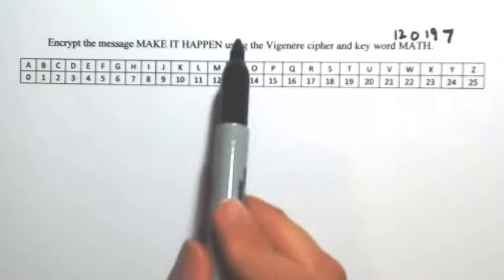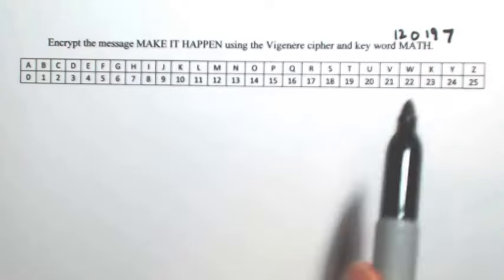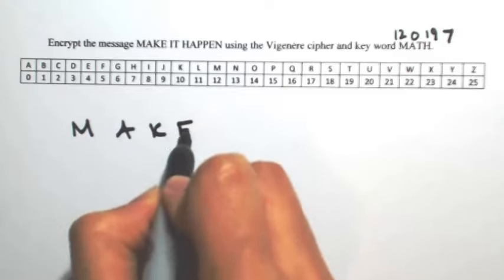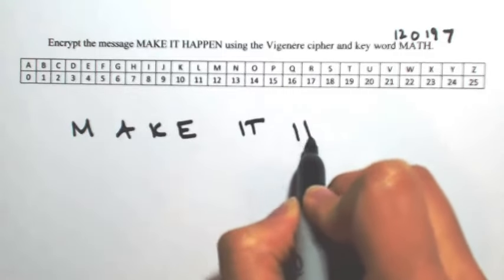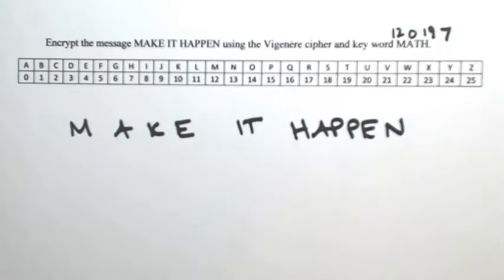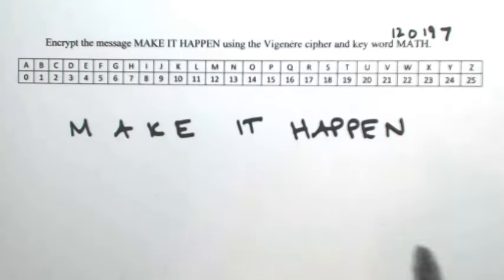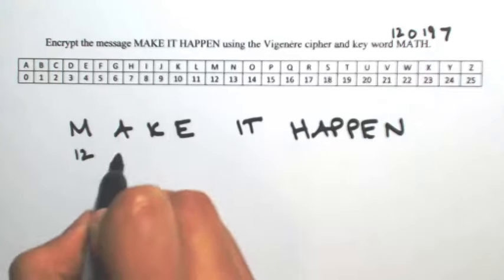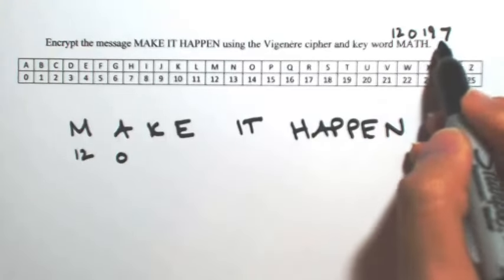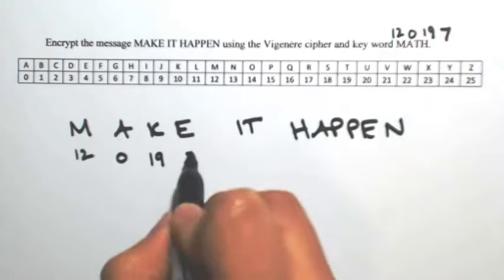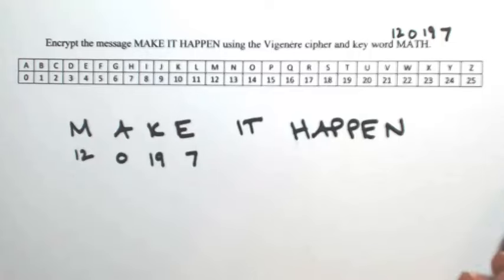Each letter in the message is going to get shifted in this order. I'm going to list out the message, and under each letter I'm going to write down how much we're going to shift it by. So the first letter gets shifted by 12, the next by 0 — so it stays the same — then 19, and then 7. Once you run out of letters, just start again.